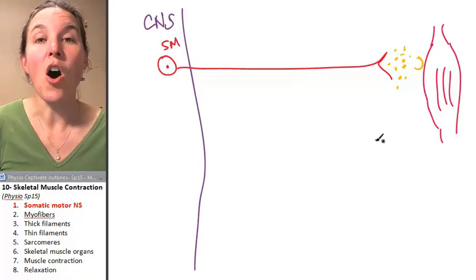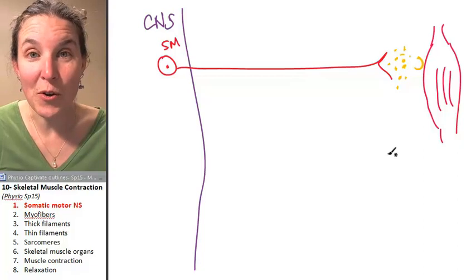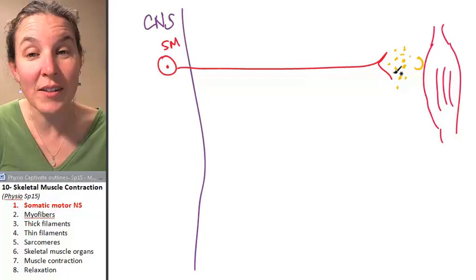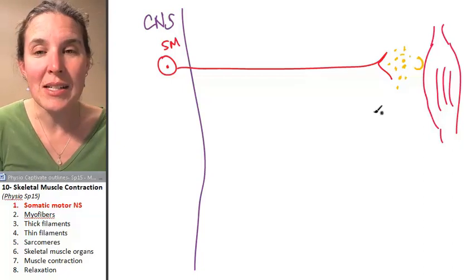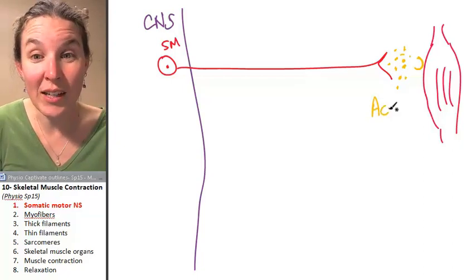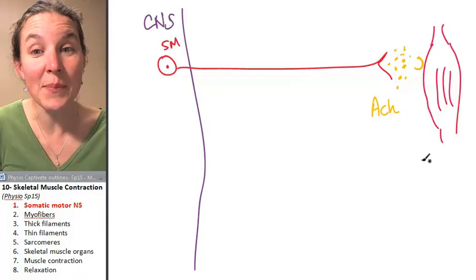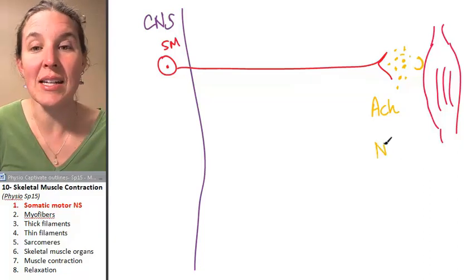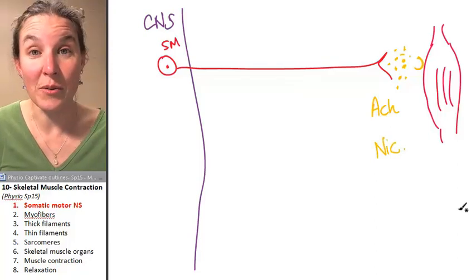All somatic motor neurons are a single neuron. The pathway is just one neuron. All of them dump acetylcholine into the synapse where the acetylcholine binds with nicotinic acetylcholine receptors on the skeletal muscle.